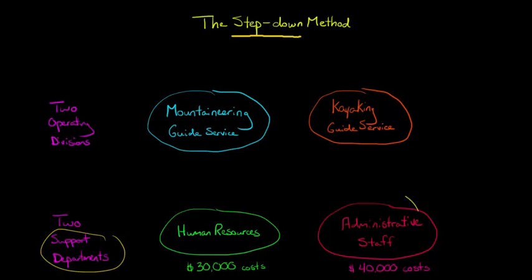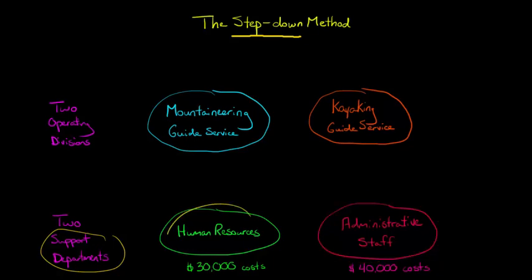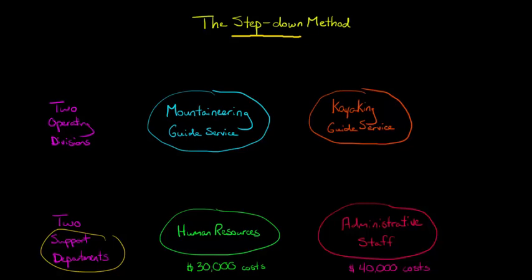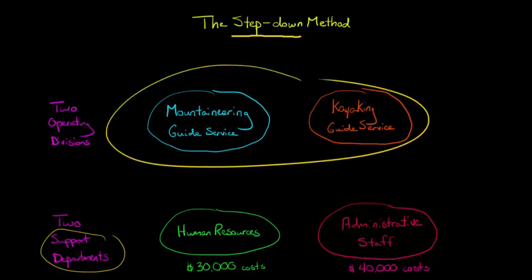For example, the administrative staff has an office manager, and the HR department might have been in charge of hiring that office manager. So the support departments are not only providing support to the operating divisions, but they're also providing support to each other. With the step-down method, we're going to try and allocate some of those costs that go between the support departments, instead of the direct method where we just ignored any interplay between the support departments and allocated everything to the operating divisions.